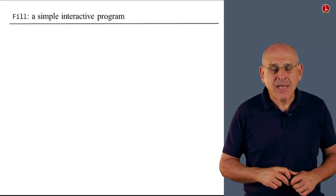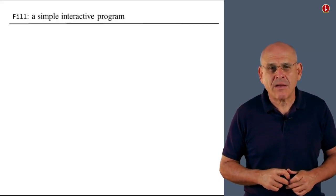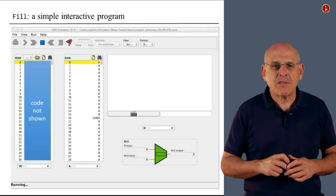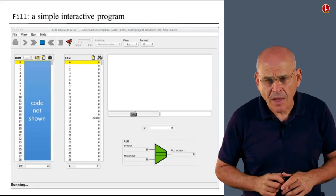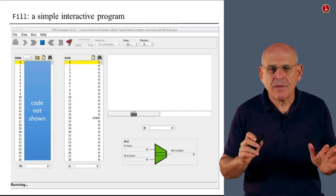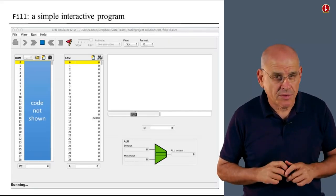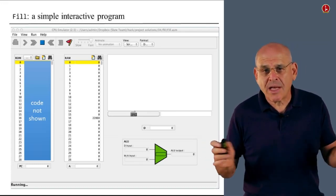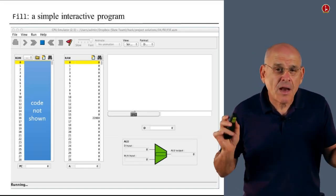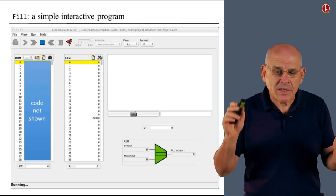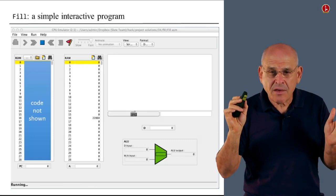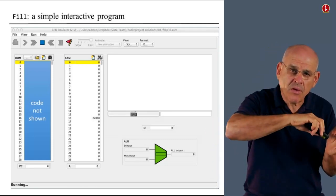All right, so this is the first assignment. And the second assignment is to write a simple interactive program that performs the following operation. This program listens to the keyboard, and as long as the user does nothing with the keyboard, nothing happens. But once the user touches a key on the keyboard, any key, once you touch a key, look what happens.